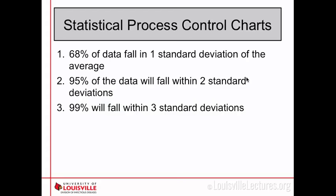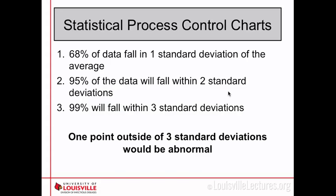95% of your data falls within two standard deviations, and 99% falls within three standard deviations. Using those lines on the chart, you can see that just having one point outside the third standard deviation would be considered abnormal — it only happens 1% of the time — and if you have multiple points outside that third standard deviation, something is probably causing that which is not normal.